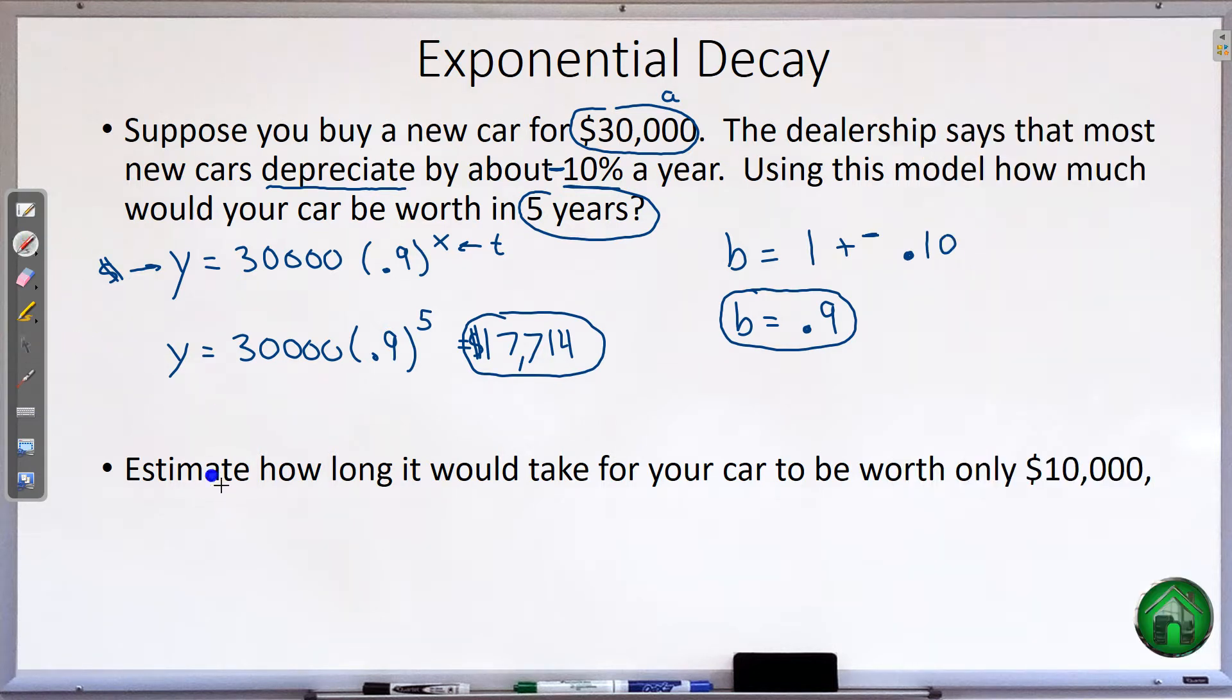So estimate the second question. Estimate how long it would take for your car to be worth only $10,000. In other words, that's a y value, because it's a dollar amount. So $10,000 equals $30,000 times .9 to the power of x. And we don't know the time, that's what we want. Sadly, again, this is an equation that we can't completely solve yet. So all we can do is sort of estimate by guessing and checking.